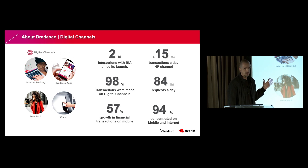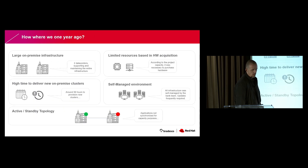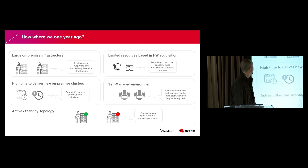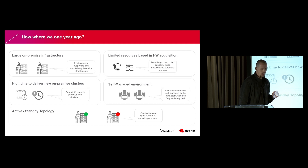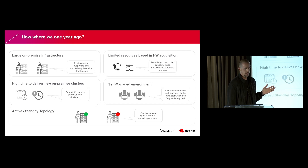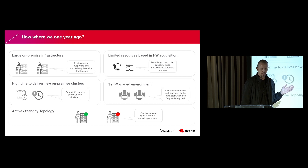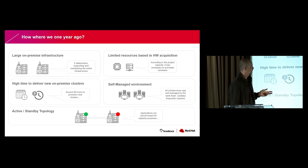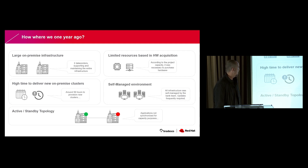To support this entire infrastructure, we took on the challenge of implementing a solution to meet the company's needs. Let's talk about the subject of this presentation, which is focused on the ARO implementation journey. How were we one year ago? We had two data centers supporting and maintaining the entire infrastructure. We had limited resources based on hardware acquisition — according to the project capacity, it was necessary to purchase hardware. If there was no hardware capacity to meet the project, there was no way to deliver the project. High time to deliver new on-premise clusters was around 56 hours to provision new clusters.